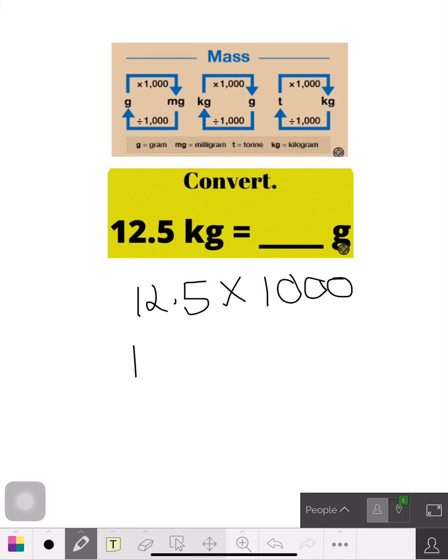The easy way to do this is write the 12.5 and now we move over three zeros, three decimal places. So you're one, two, three, put the zeros in there.